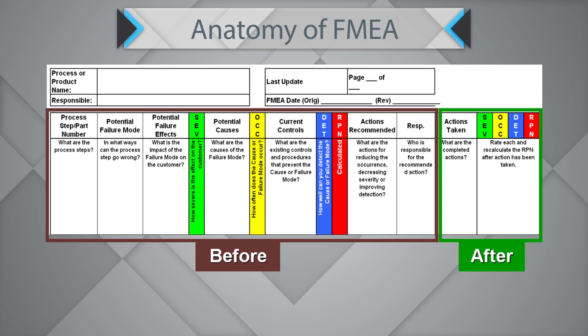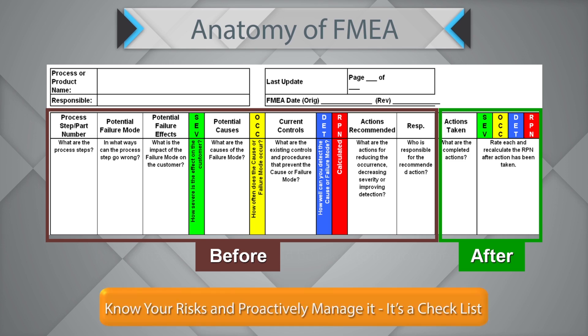You would also list recommended actions and the responsibility — who is responsible for the recommended action. Then list down the actions taken against these responsibilities and recalculate the severity, occurrence, detection numbers, and obviously the RPN as well. You must know your risk and proactively manage it. Use FMEA as a checklist.